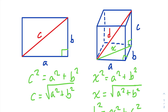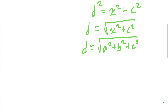So for example, if we replace the side lengths with 2, 3, and 5, then D would just be equal to the square root of the square of the first side length of the rectangular prism, which is 2,